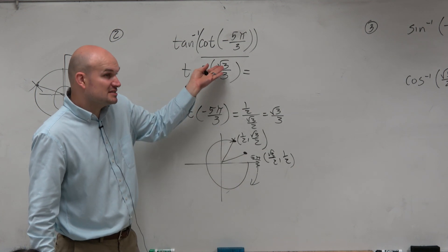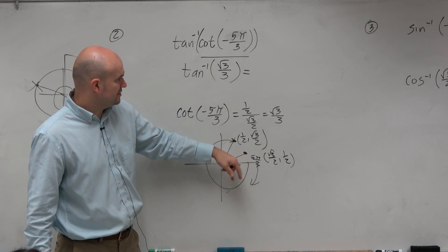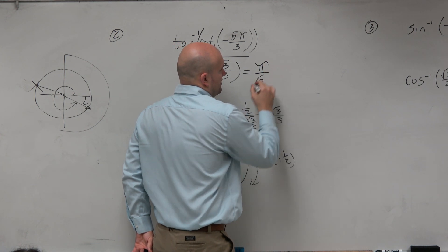And then, obviously, since it's positive, we want to stay in the first quadrant. So therefore, that angle is pi over 6.